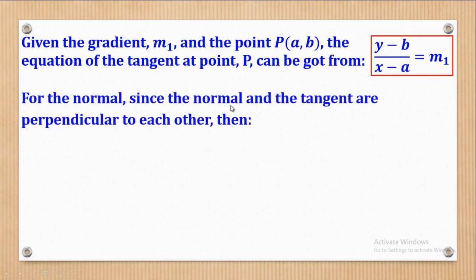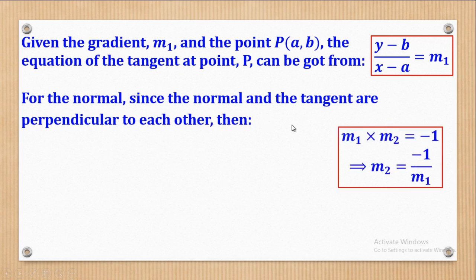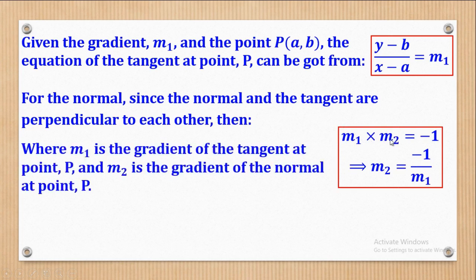For the normals, since the normal and the tangent are perpendicular to each other, it implies that the product of their gradients will be equal to negative 1. So M1 is the gradient of the tangent at point P and M2 is the gradient of the normal at point P. When I make M2 the subject, I will come up with M2 being equal to negative 1 over M1. This means the gradient of the normal is equal to the negative reciprocal of the gradient of the tangent.